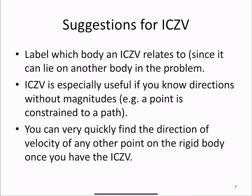ICZV can be especially useful if you know directions but not magnitudes of velocities, for example, if some point or body is constrained to a particular path. And you can very quickly find the direction of velocity of any other point on the rigid body once you know where the ICZV is.